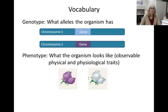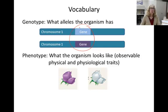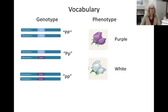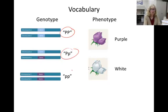There's a difference between genotype, which indicates what alleles an organism has, and phenotype, which indicates what the organism looks like — its observable physical or physiological traits. In the purple pea plant example, the genotype possibilities are big P big P, big P little p, or little p little p. The only phenotypes that are seen are purple or white.